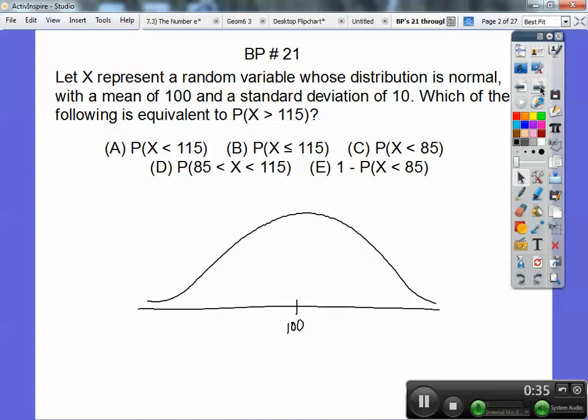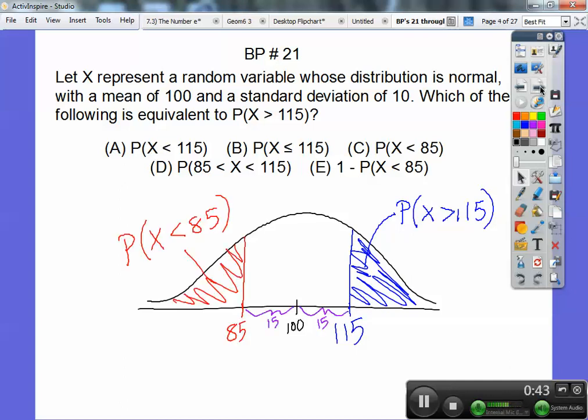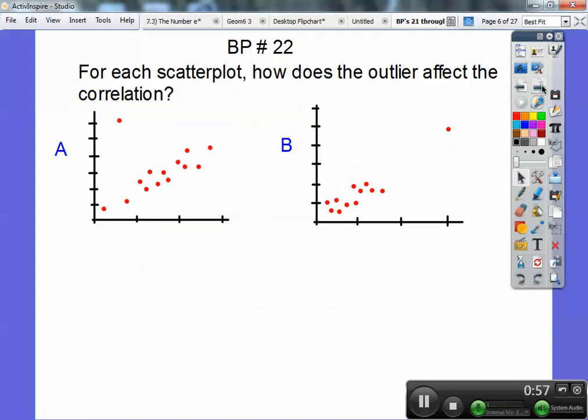A picture of that, there's my standard normal curve, and 115 would be something like that right there. When I'm looking at all these, remember it's symmetrical with respect to your mean right here. So which one is this one? That one is choice C, because those guys are equivalent.